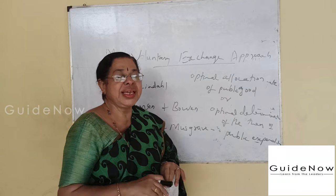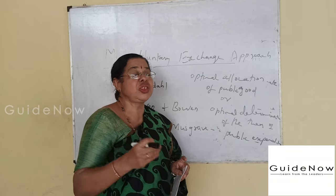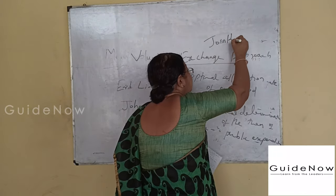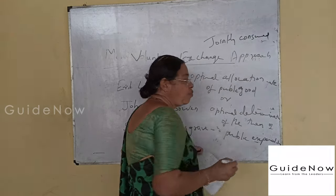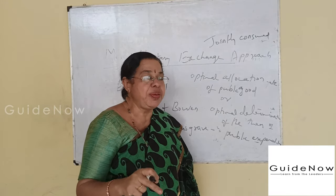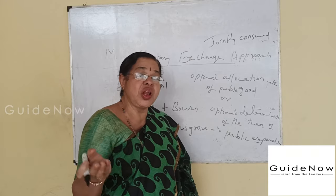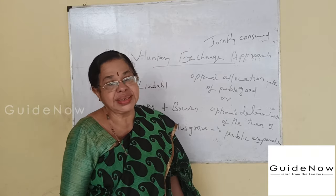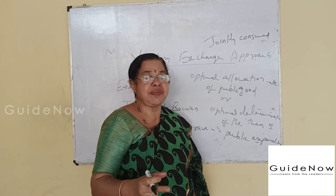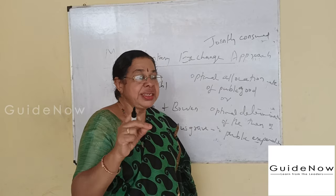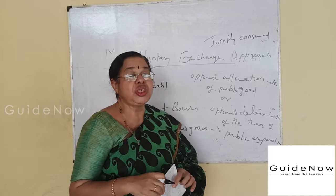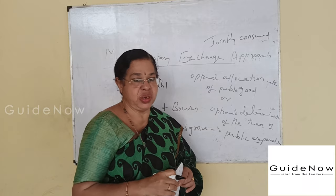In that context, many problems emerge. Public goods are jointly consumed, and because of this joint consumption nature, the pricing system is not possible for public goods. The provision of private goods is possible because of the price mechanism — the forces of demand and supply — but the distribution of public goods is not possible due to the jointly consumed nature of public goods.